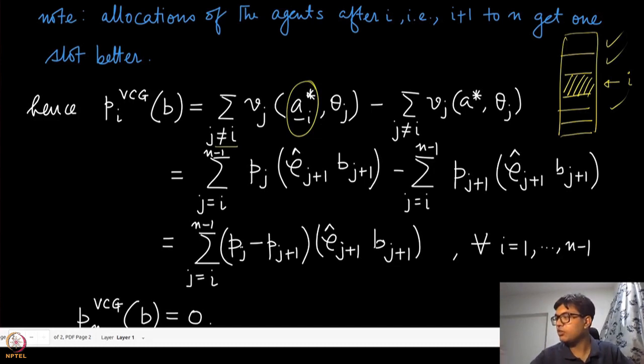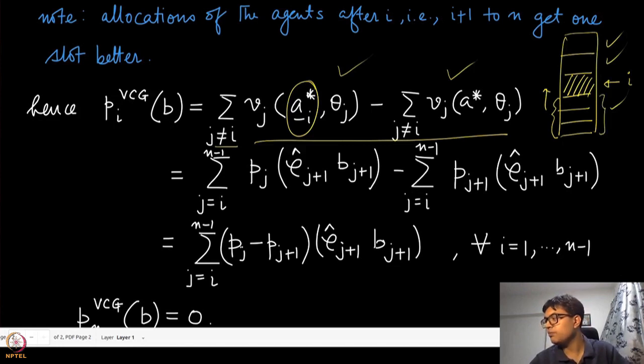Therefore, in these two—you take the subtraction of that quantity with the quantity where the allocation is the same, but now agent i is also present. So therefore, these agents do not move up; they remain where they are. For all the agents that are above i, they actually cancel out from both these sides, so we don't really need to look at them. We'll have to start from agent i; we'll go up to n-1.